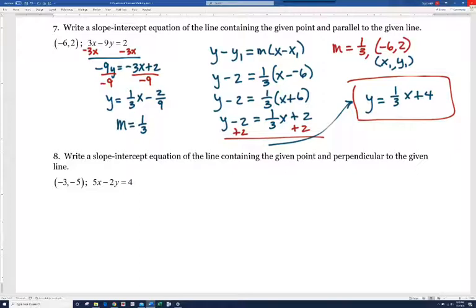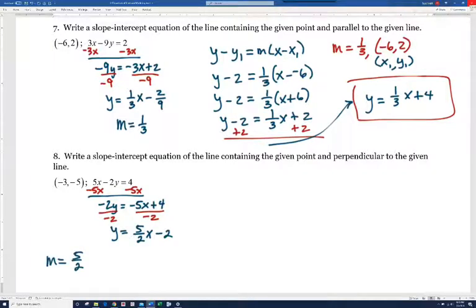Again, if you haven't tried number 8, I would encourage you to do that. First thing I want to do is subtract 5x on both sides. I'm going to solve this equation for y, and we get -2y = -5x + 4. We'll divide by -2 next. We get y = 5/2 x - 2. So what do we know here? If the slope of this equation is 5/2, and it's perpendicular to the line we're looking for, then our line has a slope of -2/5.